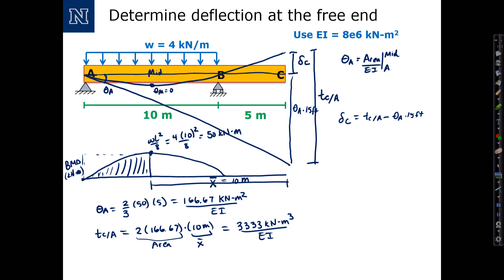Putting everything together, delta C equals 3333 minus theta A, 166.67 times the 15, and those units are going to be kilonewton meters cubed.